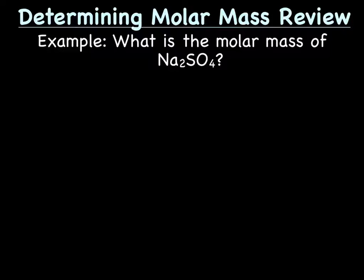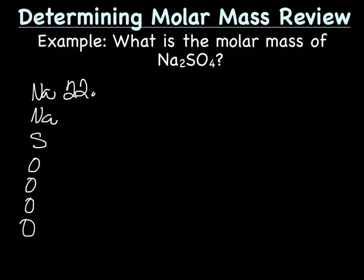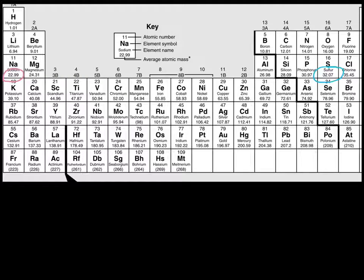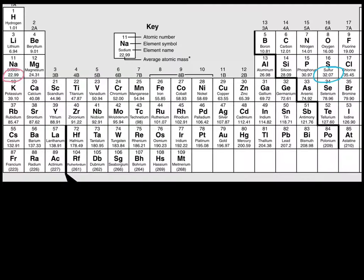The first step is to list out how many and what type of atoms we have. For sodium sulfate, we have two sodiums, one sulfur, and four oxygens. Then we use the average atomic mass from the periodic table. Sodium is 22.99 grams, sulfur is 32.07 grams, and oxygen is 16.00 grams.